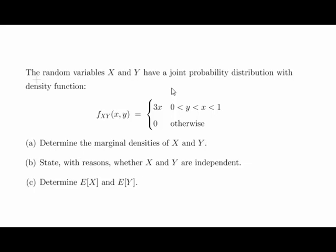In this presentation we're going to look at joint probability distributions of continuous random variables. We have random variables x and y with a joint probability distribution f(x,y) — that's how we write a joint probability distribution for two continuous random variables. It equals 3x, with the condition 0 ≤ y ≤ x ≤ 1.